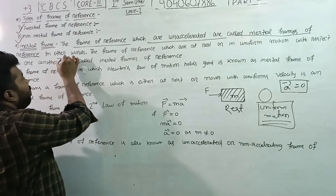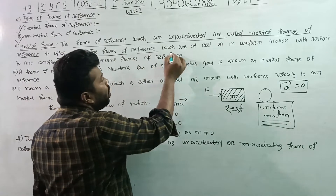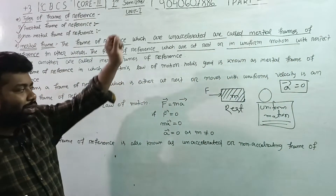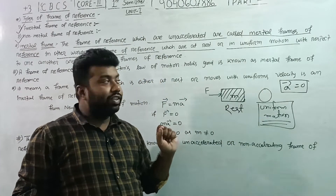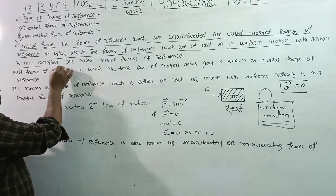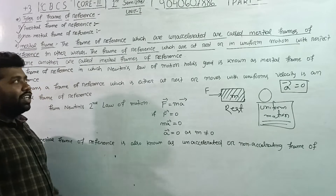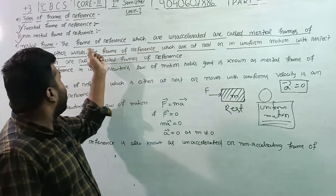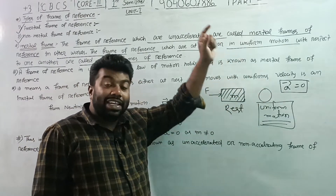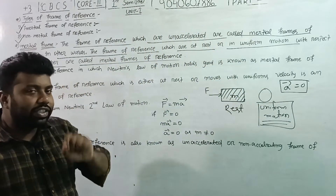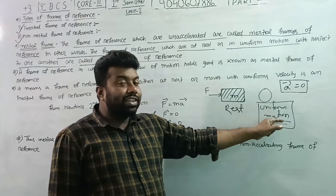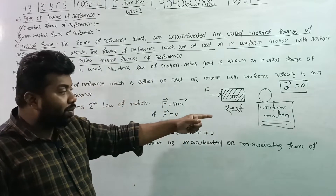In other words, the frame of reference which are at rest or in uniform motion — the object is at rest or in uniform motion with respect to one another — that frame of reference is called the inertial frame of reference. The frame of reference is unaccelerated, meaning acceleration equals zero.